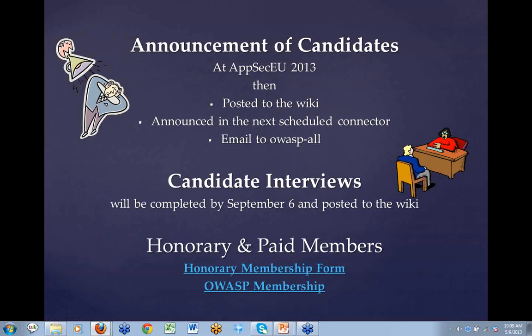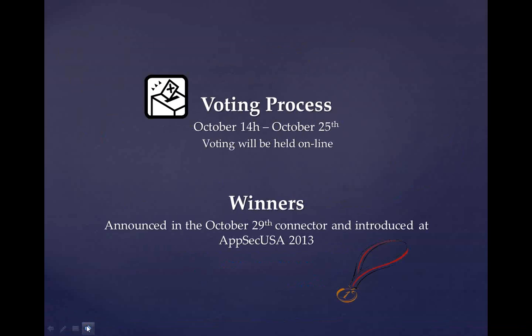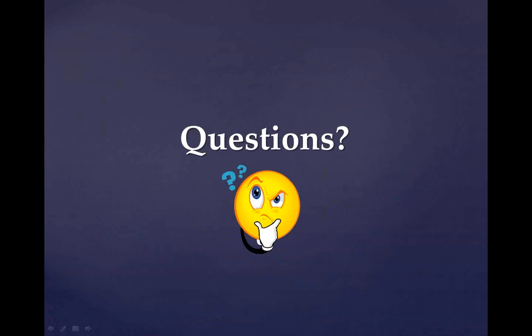The deadline for memberships is September 30th, so that we have enough time to log everything into the voting system. All the dates and timelines will be posted to the Foundation calendar, and you're going to receive so much information over the next several months. If anybody on this call is interested in submitting their candidacy for the board elections, there is an election nomination form that will be posted to the election page.